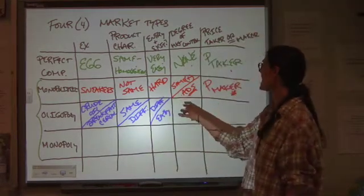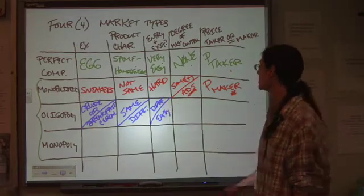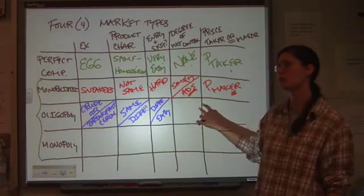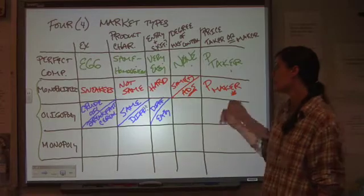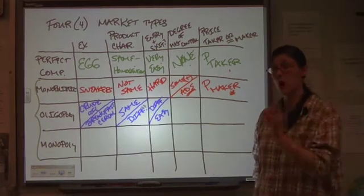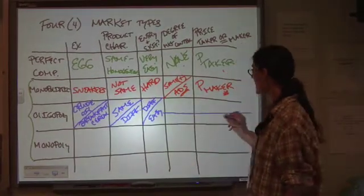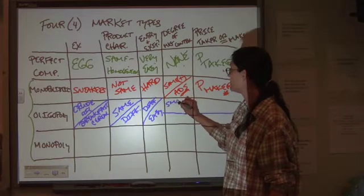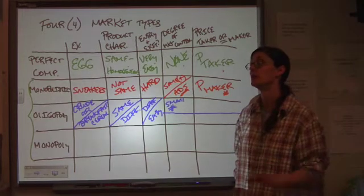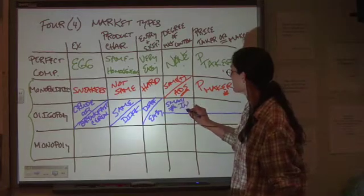So far, we don't have anything here that's really differentiating an oligopoly. Degree of market control. Now, this is where we see the big difference. With an oligopoly, the key is that you have a very small number of firms. A small number that are controlling pretty much the entire show. Small number in control.